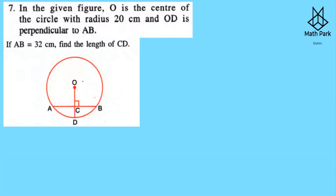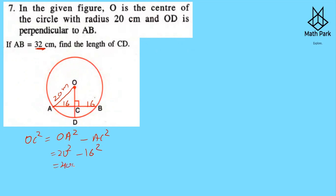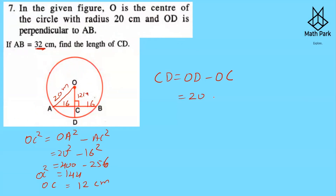Question 7: Radius = 20 cm, OD ⊥ AB, AB = 32 cm. Since perpendicular from center bisects chord, AC = 16. By Pythagoras: OC² = OA² − AC² = 20² − 16² = 400 − 256 = 144, so OC = 12 cm. OD is a radius, so OD = 20 cm. Therefore CD = OD − OC = 20 − 12 = 8 centimeters.